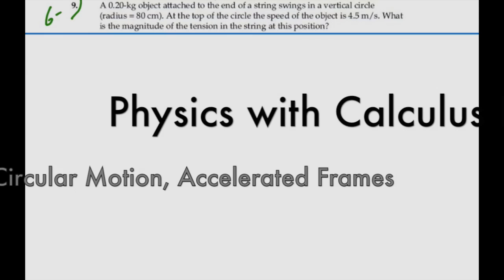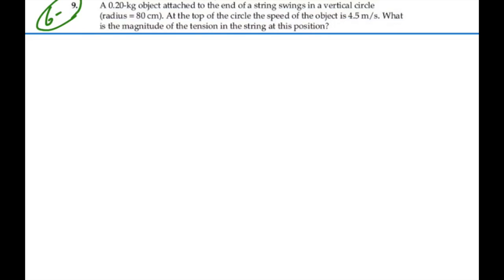Here's problem 6.9. A 0.2 kg object attached to the end of a string swings in a vertical circle, radius of 80 cm. At the top of the circle, the speed of the object is 4.5 m per second. What is the magnitude of the tension in the string at this position?